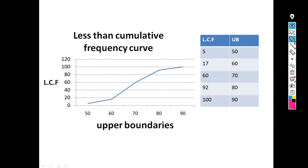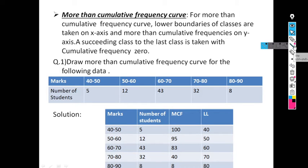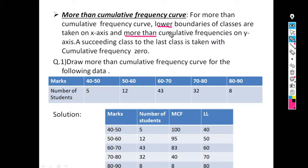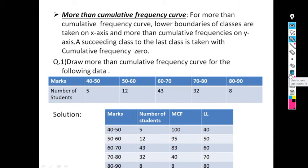Next, we go for the more than cumulative frequency curve. For this curve, we require lower boundaries on the x-axis and more than cumulative frequency on the y-axis. For less than cumulative frequency, we required upper boundary, while for more than cumulative frequency, we require lower boundary. To find MCF: 8 as it is, then addition of 8 and 32 gives 40.